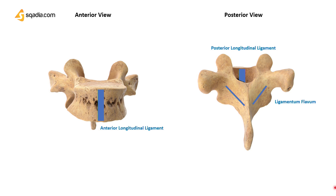Now let us move to a bit tricky part — the transverse processes. Interestingly, most of the muscles getting attachment have the term 'transverse' in their name: the costotransverse, having three varieties — superior, inferior and lateral — the intertransverse, and the levator costae posteriori.